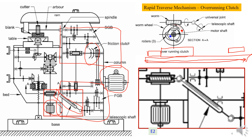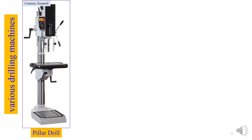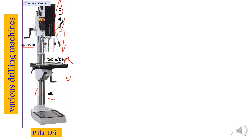Now let us look at constructional features of a drilling machine. There are various types of drilling machines available; we will only mention the important ones. This is a pillar drilling machine — this one is the pillar. This is the cutting head, which provides motion and power to the spindle, and the spindle can also be fed downward for the actual drilling operation. This is the table. The table cannot be fed up and down, but it can be positioned — it can be positioned up and down depending on the size of the job.